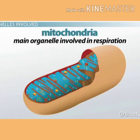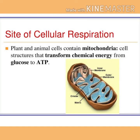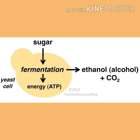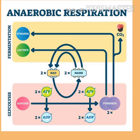The breakdown of pyruvate to give carbon dioxide, water, and energy takes place in mitochondria. The pyruvate may also be converted into ethanol and carbon dioxide. This process takes place in yeast during fermentation. Since this process takes place in the absence of air, it is called anaerobic respiration.